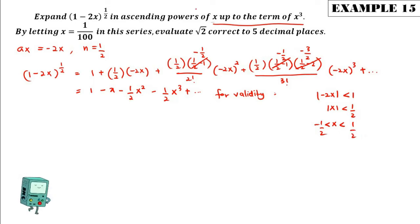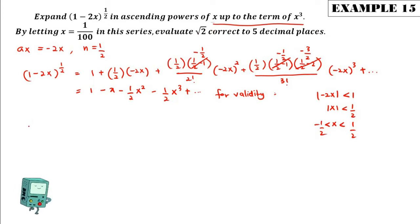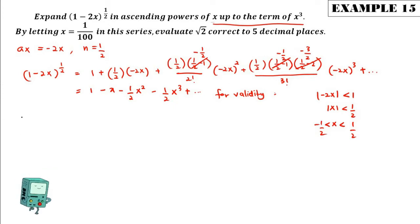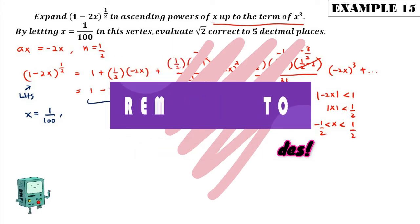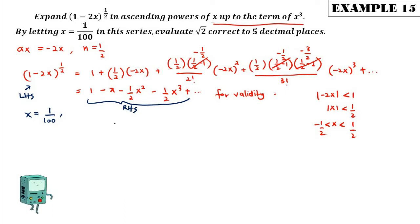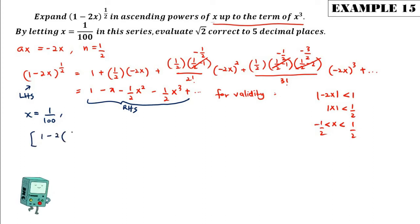The second task is: by letting x = 1/100 in this series, evaluate the result correct to five decimal places. We substitute x = 1/100 into both the left-hand side and the right-hand side. On the left-hand side we have (1 − 2·(1/100)) to the power of 1/2, which is (1 − 2/100)^(1/2).